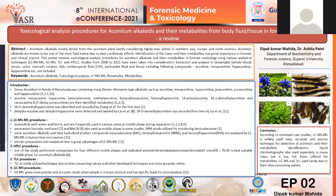When we talk about aconitum alkaloids, there are many compounds to know: aconitine, mesaconitine, hypoaconitine, jesaconitine, indaconitine, and lappaconitine are the different aconitum alkaloids.